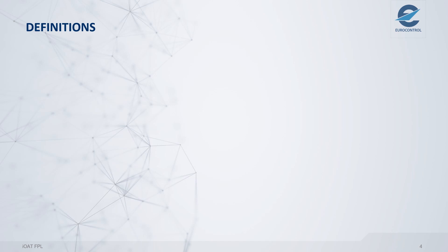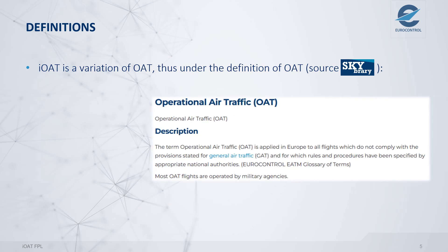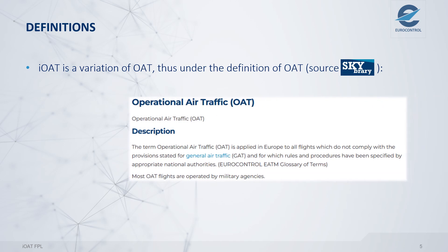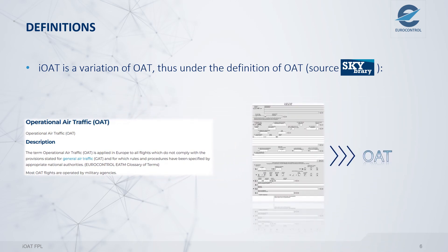Since an IOAT flight plan is foremost OAT, here is the definition of OAT: OAT is for flights that do not comply with GAT provisions and are mostly operated by military agencies. The IOAT flight plan is based on the ICAO Flight Plan 2012 format, adapted for OAT needs.